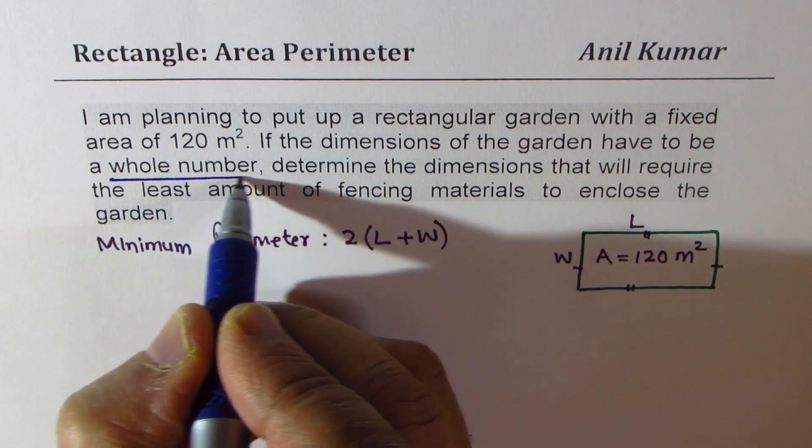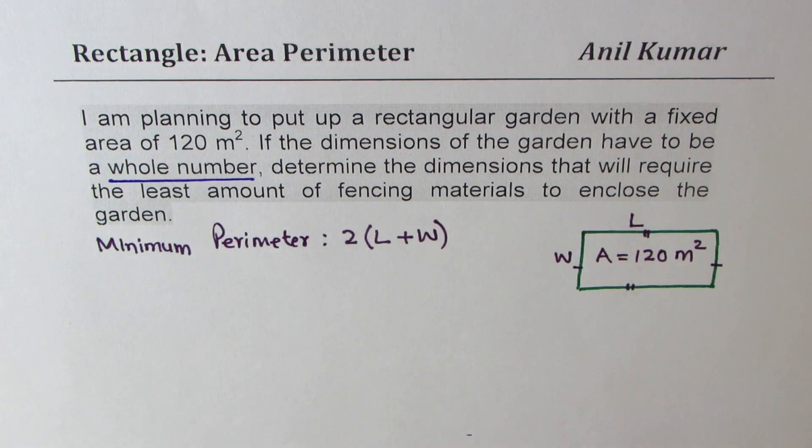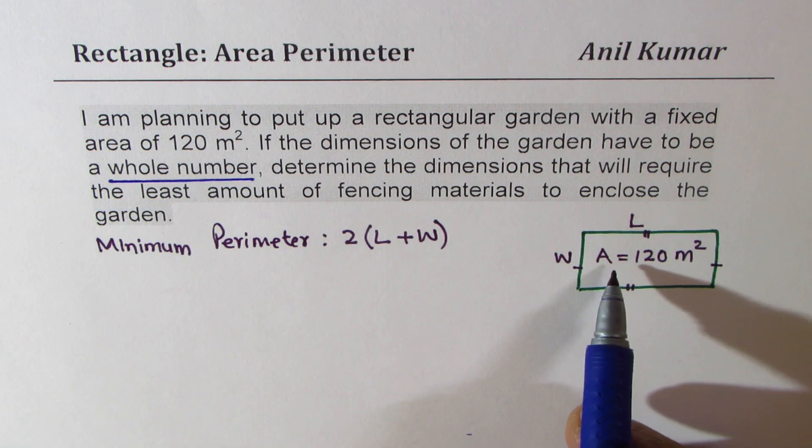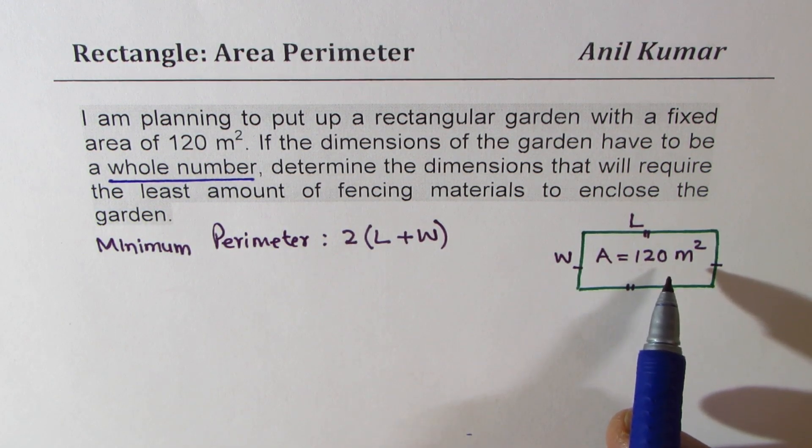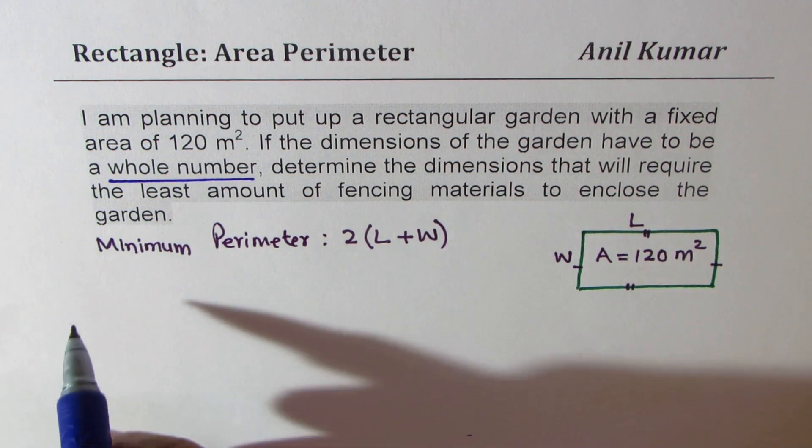like numbers 1, 2, 3, 4, what we can do is that we can try out all the values which will give us area of 120. So we'll try all the values which will give us area of 120,